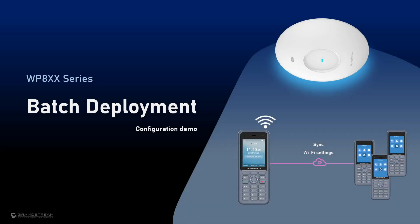Hello and welcome to another Grandstream video guide. In this video, you will learn how to utilize the batch deployment feature available on the Grandstream Wi-Fi cordless IP phones WP800 series. The main function of batch deployment is to synchronize the configuration from one WP device to other WP devices in the same network environment.